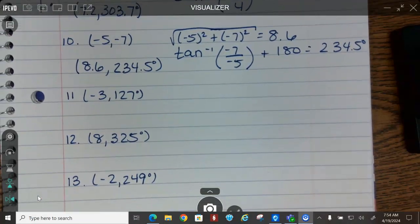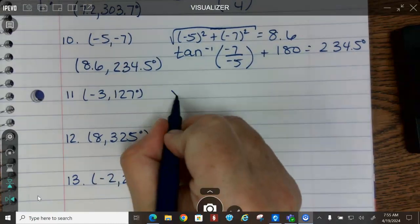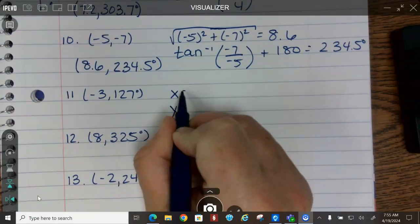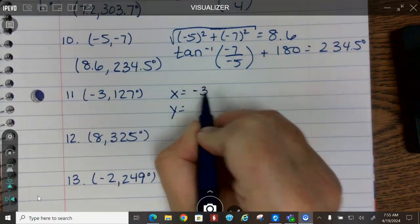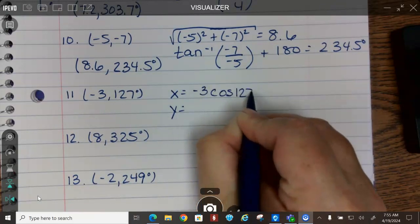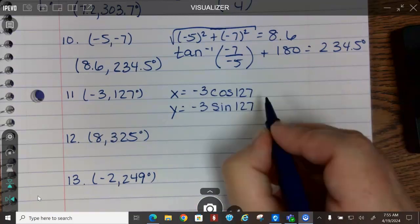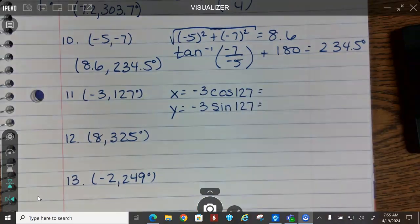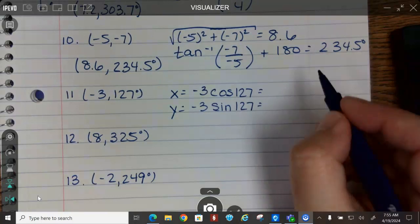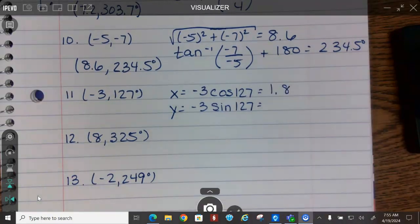Now these are polar going to rectangular, and these are just like those x and y equations we used with vectors. So negative 3 cosine 127 and negative 3 sine 127. We get 1.8 and negative 2.4.